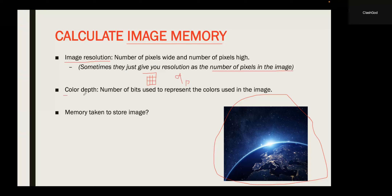Next is color depth. Color depth is the number of bits used to represent the colors used in the image. For example, if I have two colors, then I can use just one bit or one binary digit to represent two colors. So that is color depth and that is image resolution.